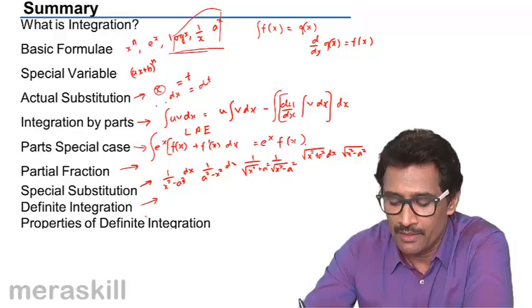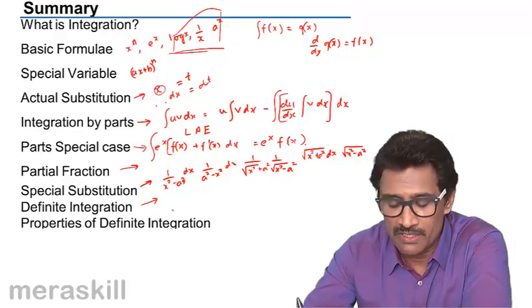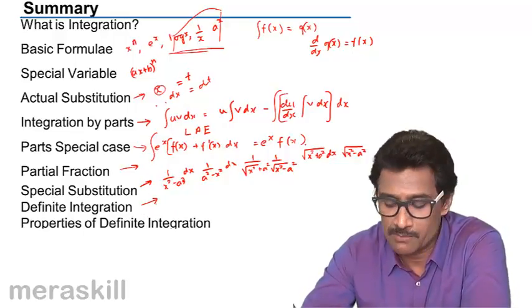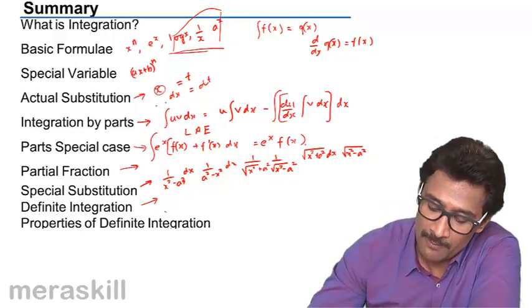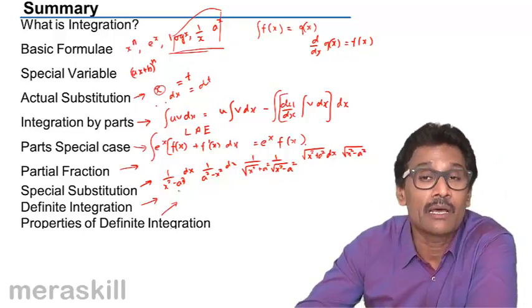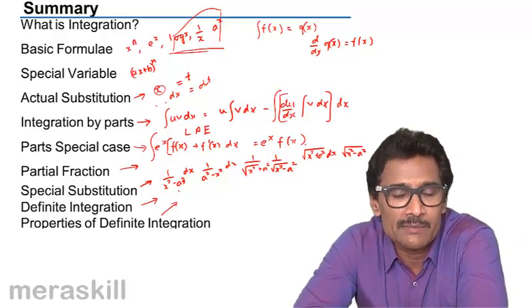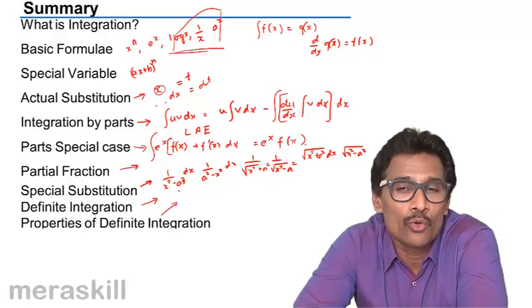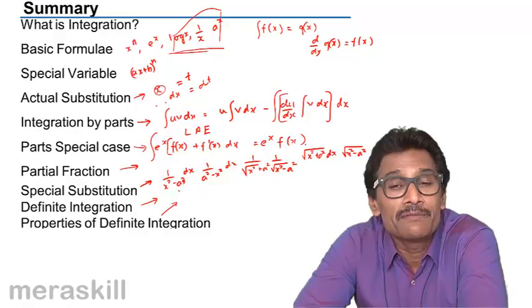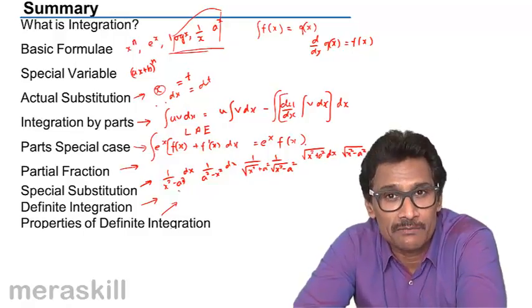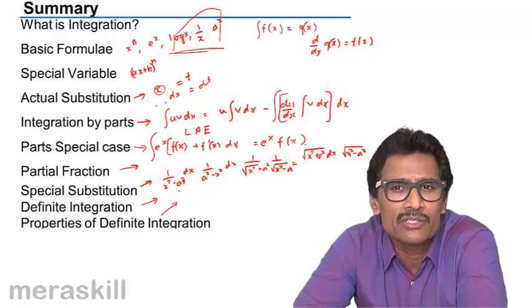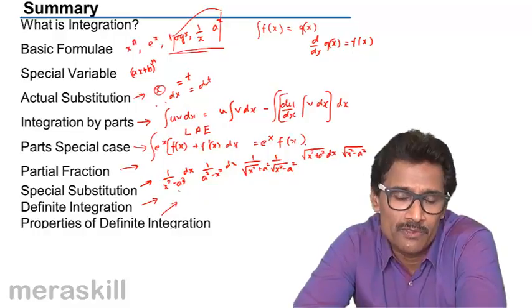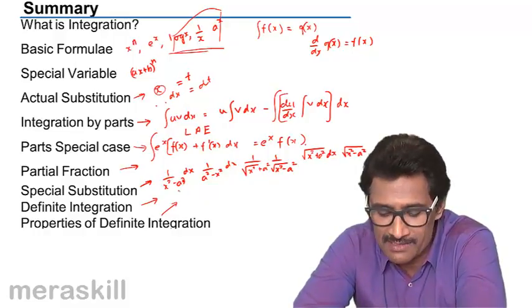Then of course we did the properties of definite integration - various properties which we have used often. After this we did a number of miscellaneous problems and also a few questions on slope. If the slope is known, how can you find a function? Which is nothing but integration of the slope, which is going to be dy by dx.